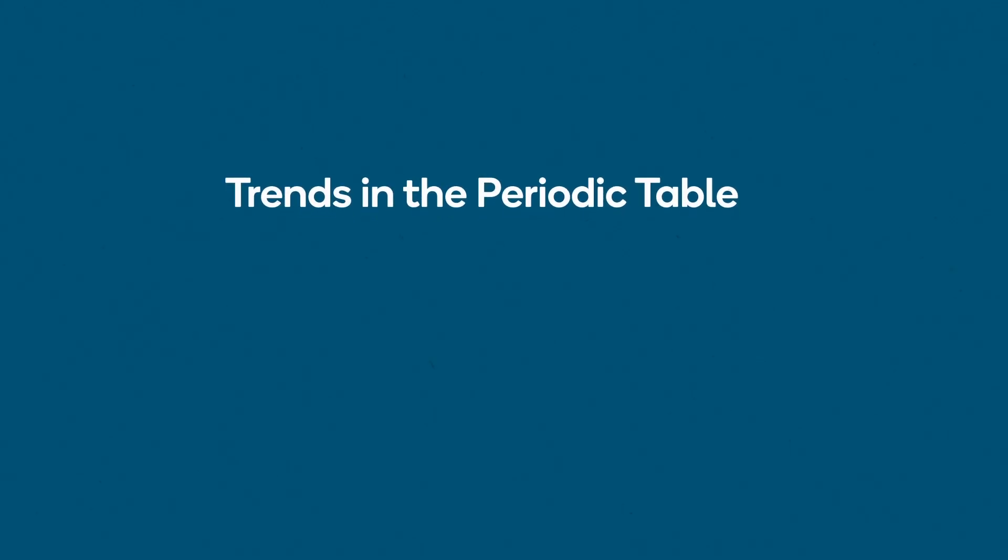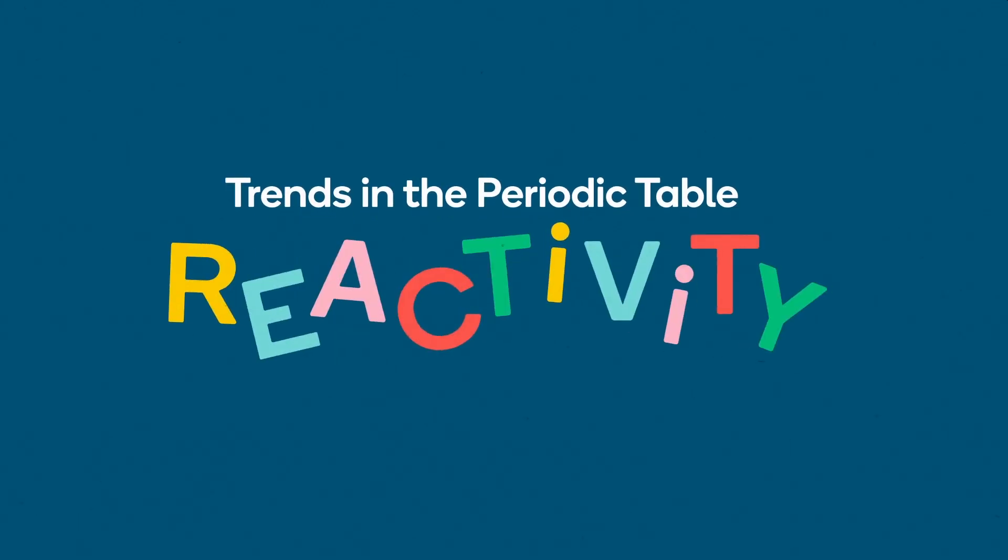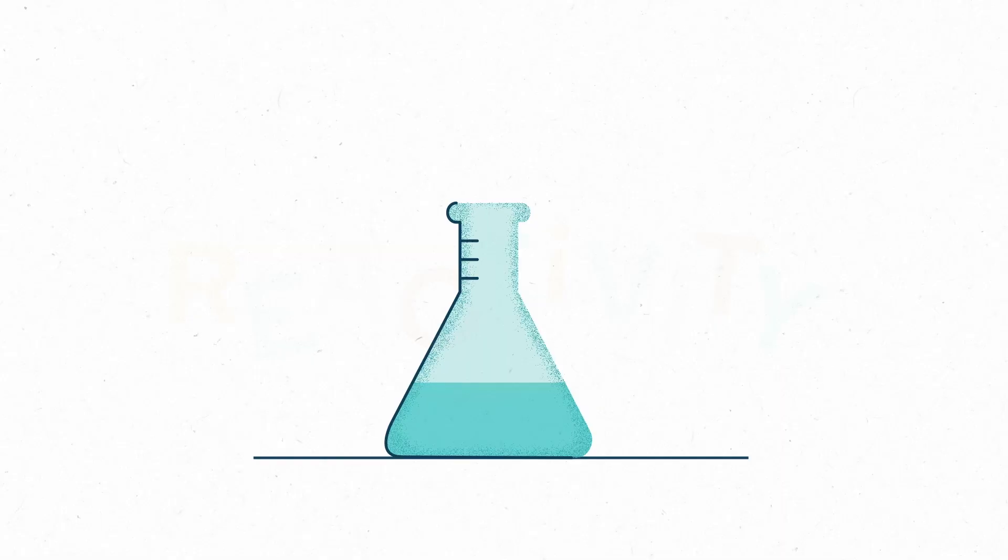One set of trends in the periodic table that's helpful to know is the trends for reactivity, the way that one substance chemically interacts with other substances.